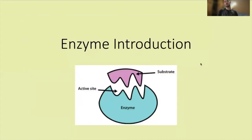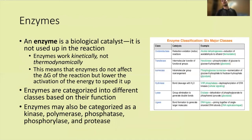Now that we've discussed how proteins are made, we're going to cover enzymes. An enzyme is a biological catalyst that is not used up in the reaction. Enzymes work kinetically, not thermodynamically — they do not affect the delta G of the reaction, but lower the activation energy to speed it up. Adding an enzyme doesn't affect equilibrium; it only affects how quickly the reaction reaches that equilibrium.